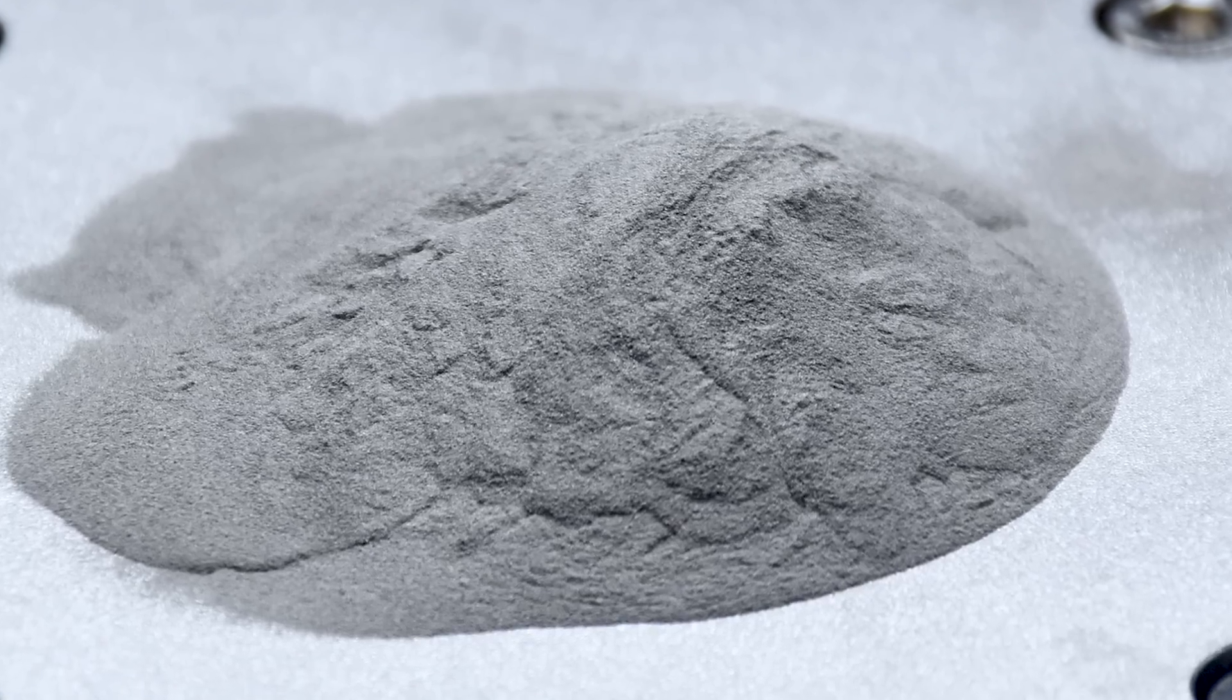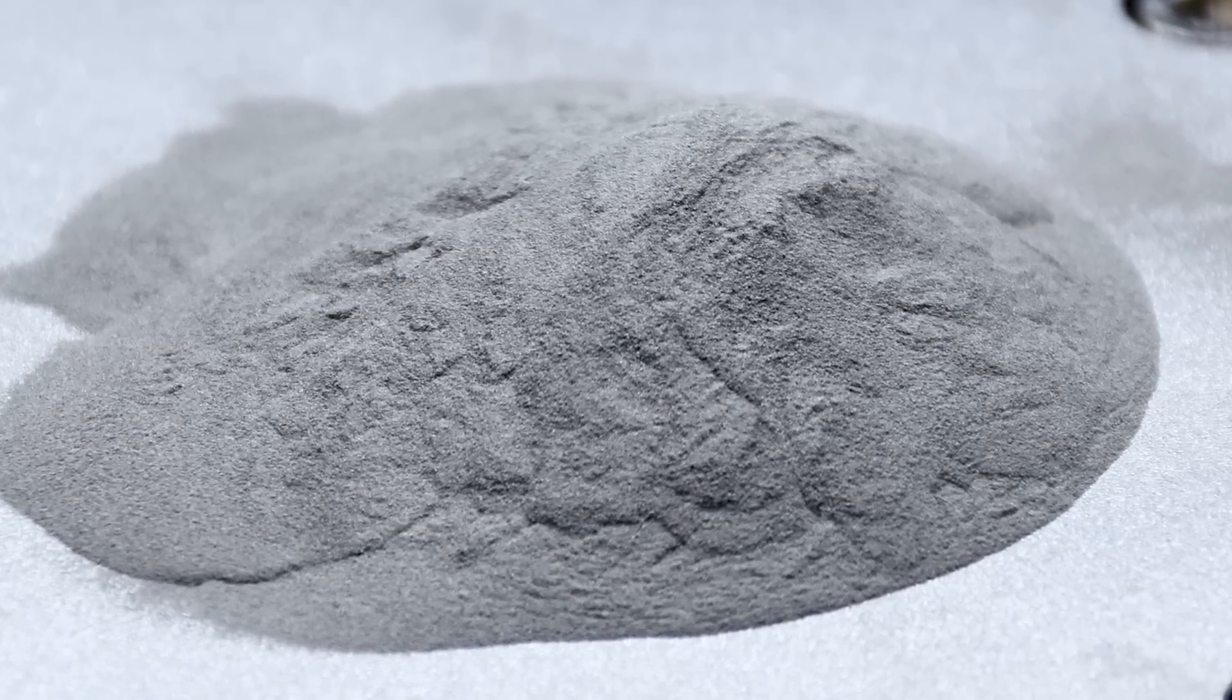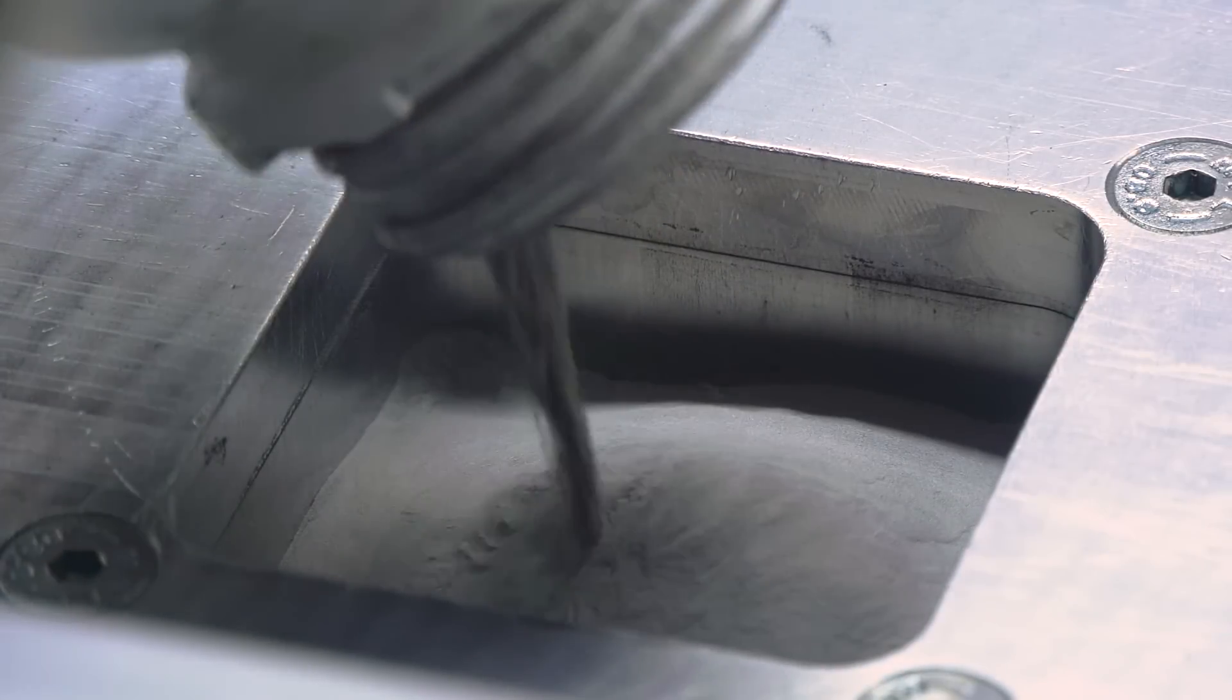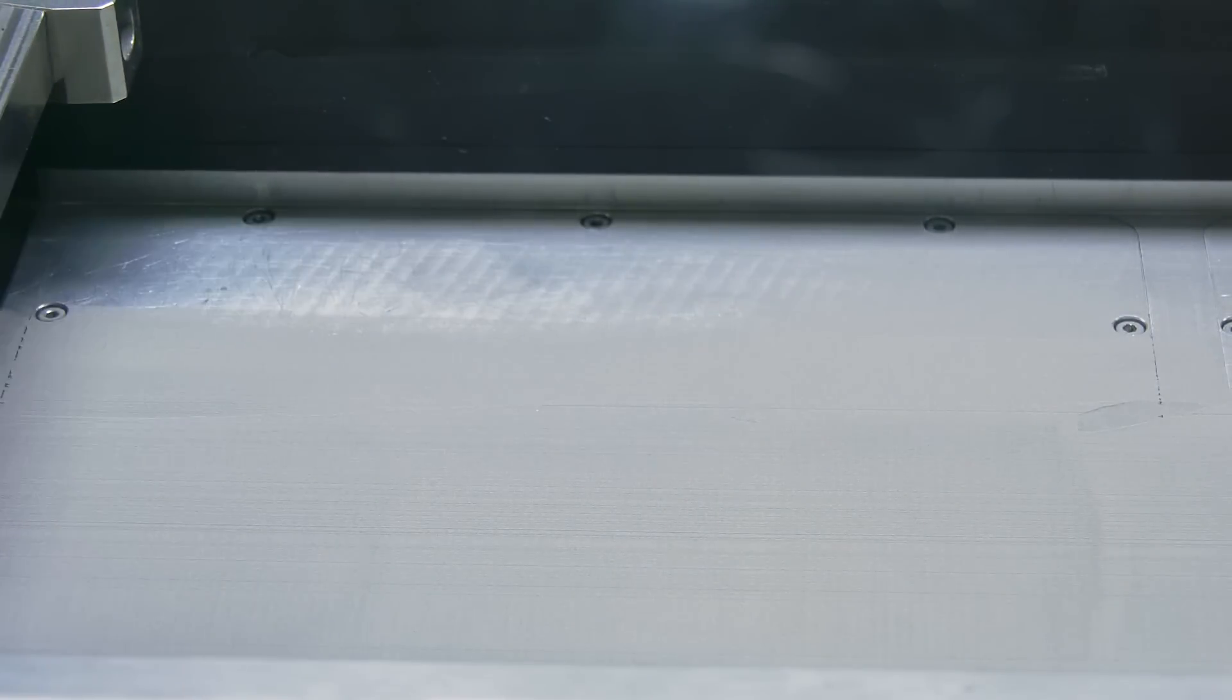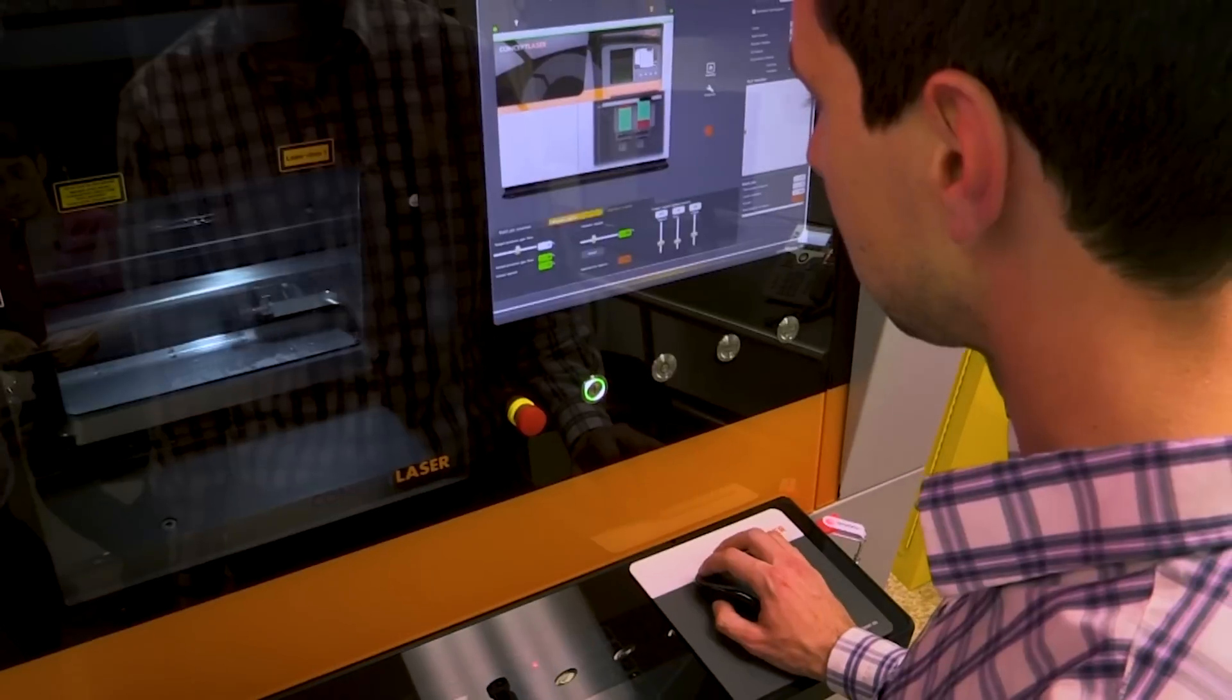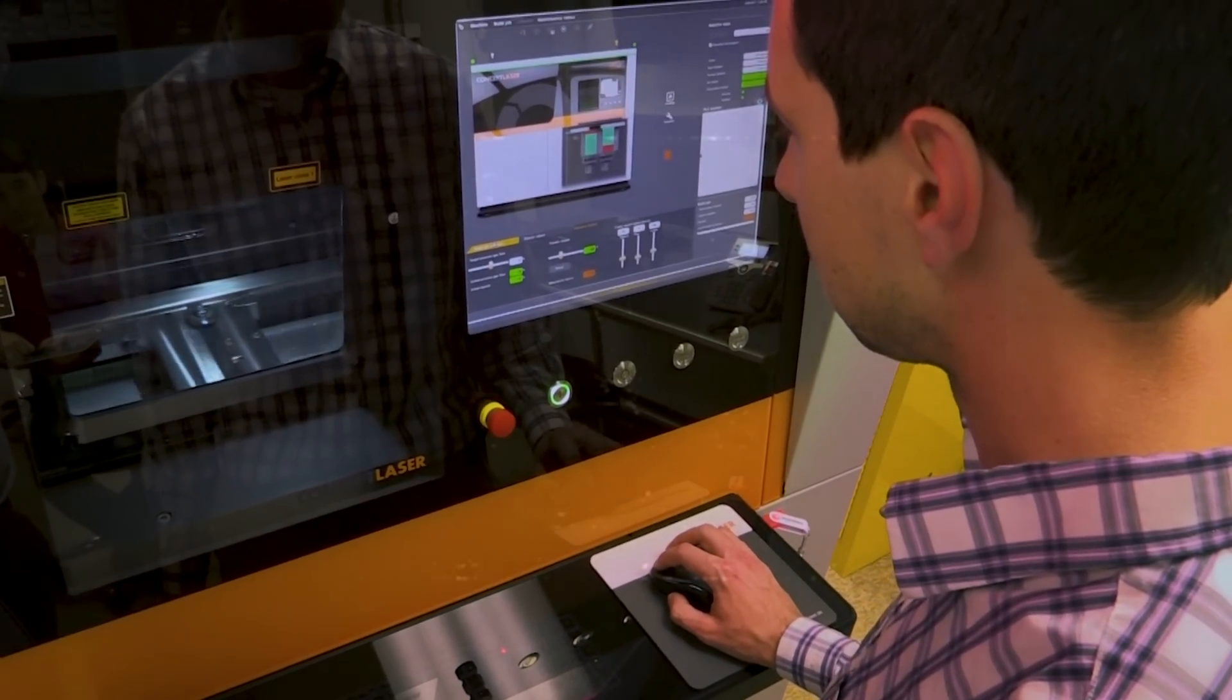In 3D printing, parts begin as a powder fed into the printer. Construction begins as the machine lays down a thin layer of metal powder that is melted and re-solidified by a rastering laser, only in the areas that will make up the final part.